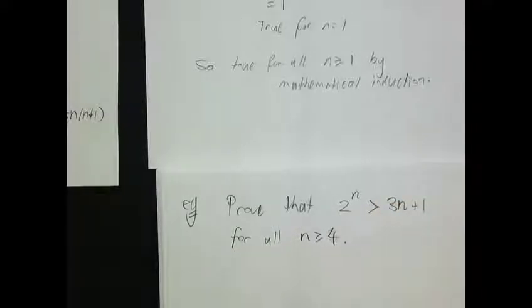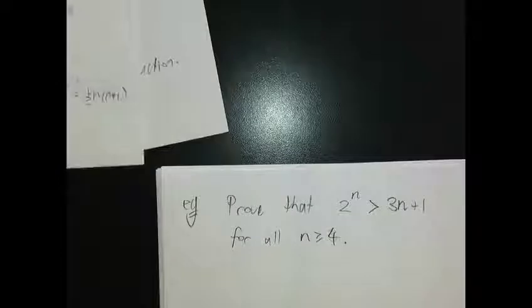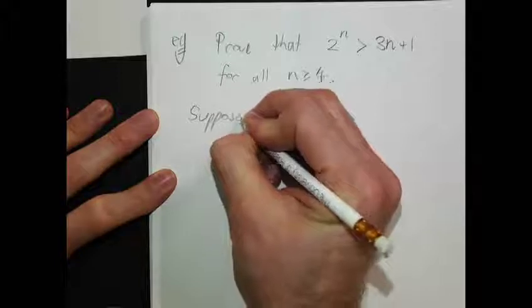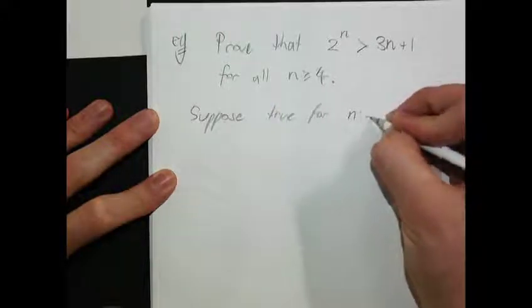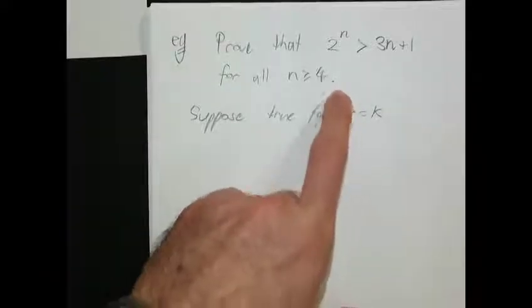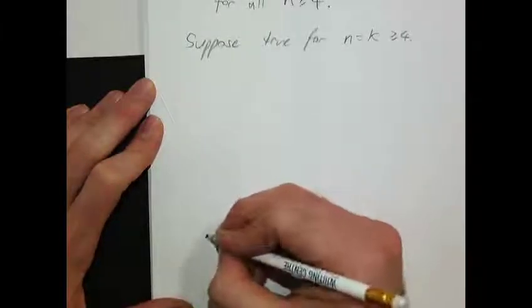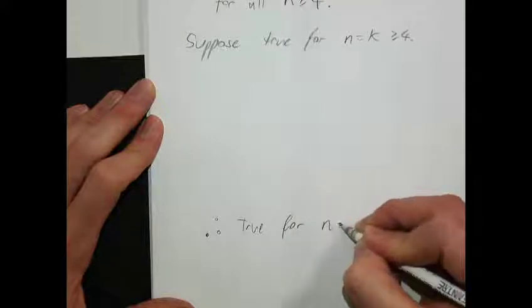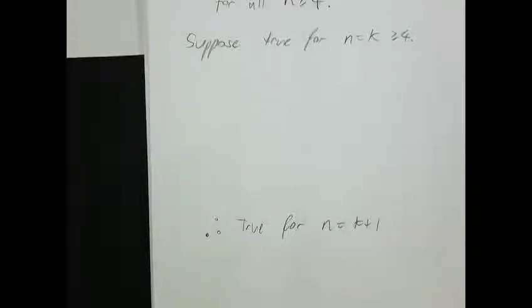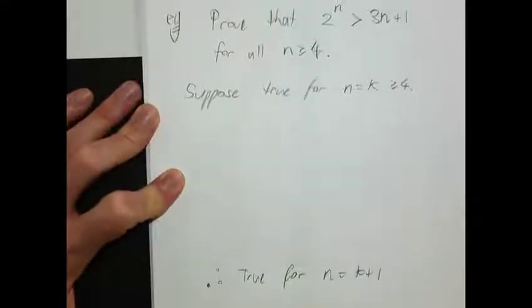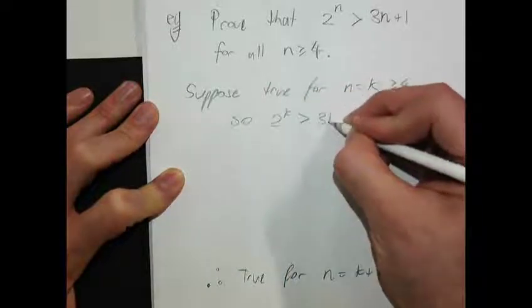Example 2—note that it doesn't have to start at one or zero; it can start at any number. This is an inequality, so the reasoning in the middle is slightly different, but the overall structure is the same. Suppose true for N=K, where K≥4. That means 2^K is strictly greater than 3K+1. Then after some working, we want to conclude: therefore true for N=K+1, meaning 2^(K+1) is strictly greater than 3(K+1)+1.